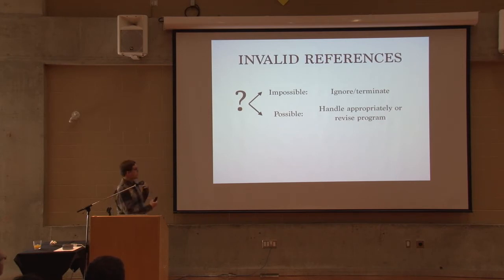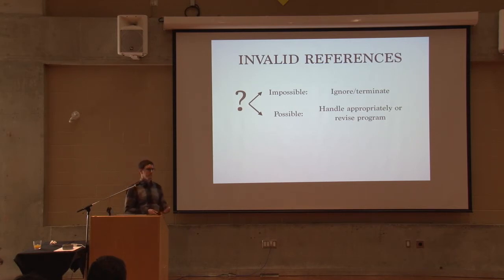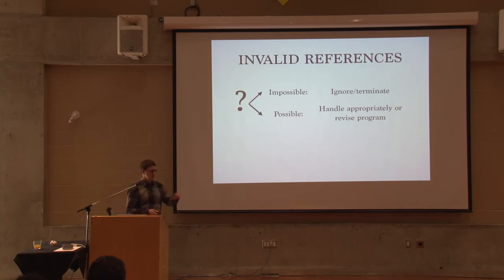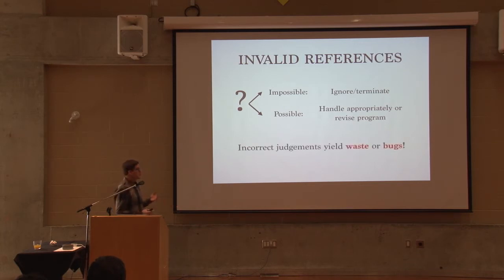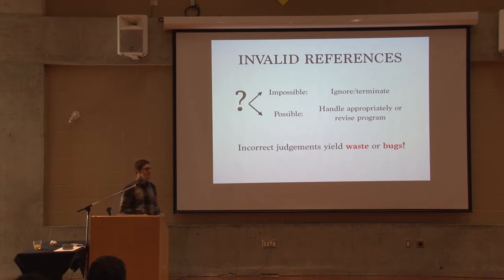You always have to think about whether it's impossible for references in your map to be invalid. If it's possible, you need to handle it appropriately; if it's not, you can use .get or some similar way of sweeping problems under the rug. But if you make the wrong call and use .get in inappropriate situations, you get bugs, and if you invest a lot in writing that code you're wasting time.